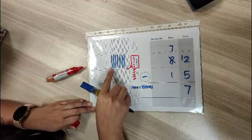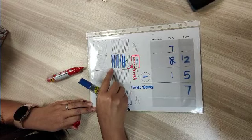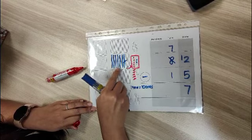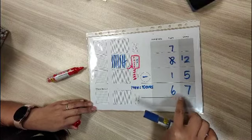For the 10s, I have 7 tenths. I take away 1 tenths, so I'm left with 1, 2, 3, 4, 5, 6 tenths. My final answer would be 67.